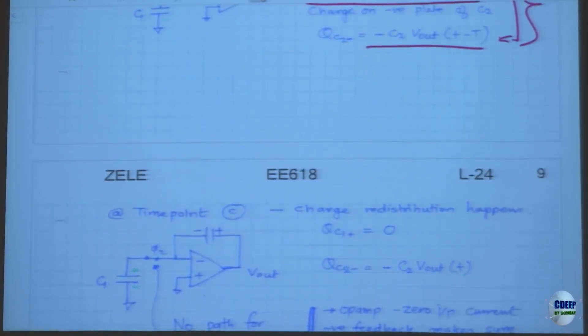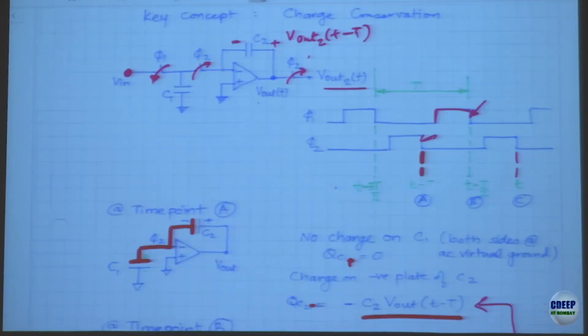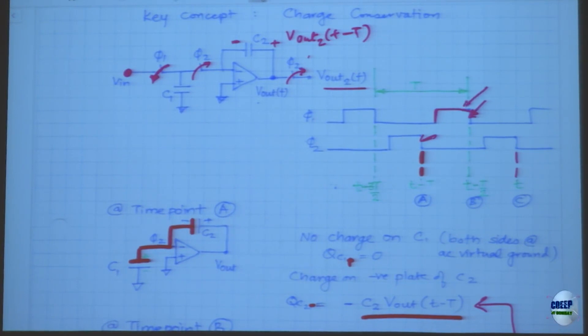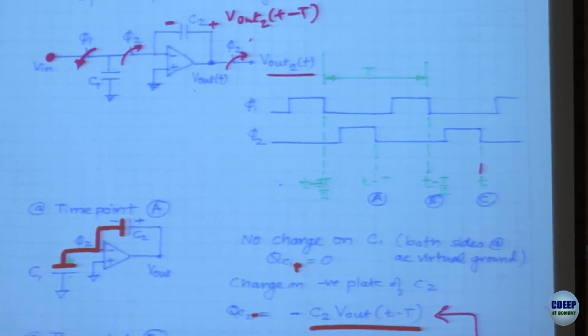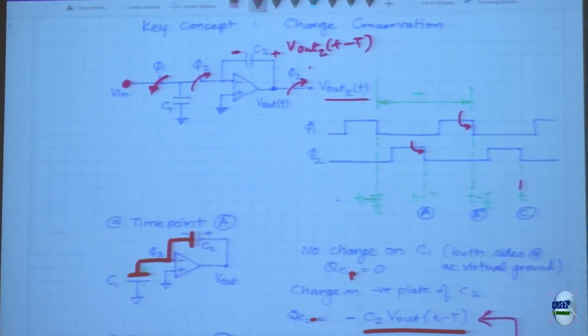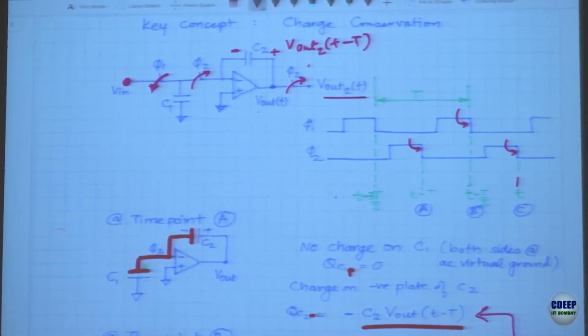During phi1, we close phi1. We are doing the calculations at the end of the cycle — when you turn on or turn off the switch, it takes some time to settle, and our calculations are done just before we open that switch, when all values are stable. We are not interested in the settling transient; that's taken care of by ensuring the op amp has enough unity gain bandwidth.